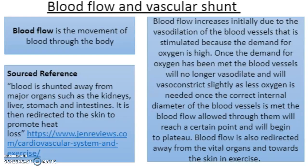Blood flow and vascular shunt: blood flow is the movement of blood through the body. Blood flow increases initially due to the faster dilation of blood vessels stimulated by the high demand for oxygen. Once the demand for oxygen has been met, the blood vessels will no longer vasodilate and will vasoconstrict slightly. The blood flow will reach a certain point and then plateau. Blood flow is also redirected away from the vital organs and towards the working muscles during exercise. The vascular shunt is the process of redistribution of blood during exercise — pre-capillary sphincters on the end of capillaries and muscle tissues constrict blood vessels to non-vital organs such as the bladder, and blood is redistributed to the working muscles where the supply is needed.